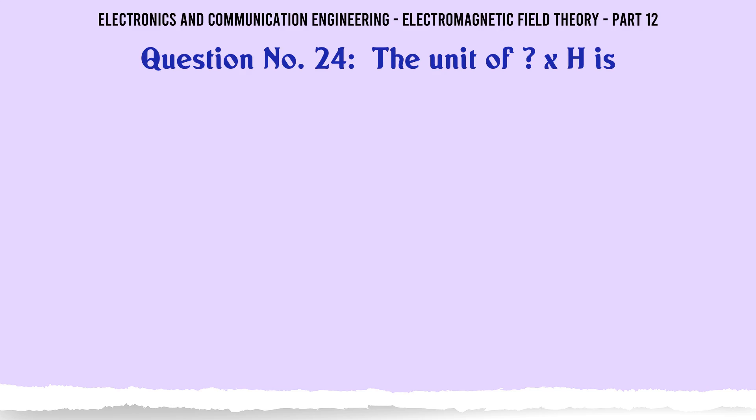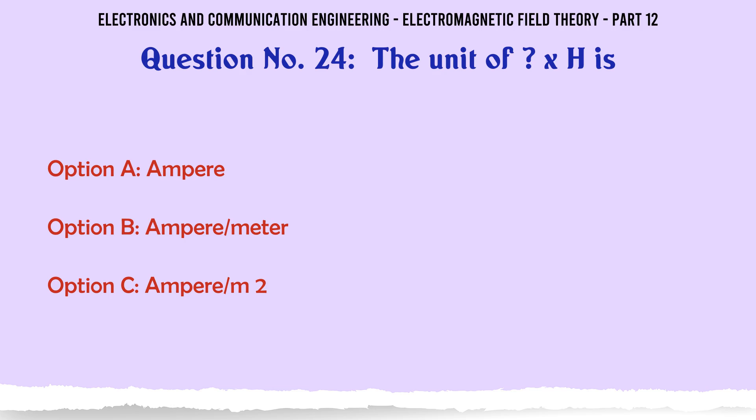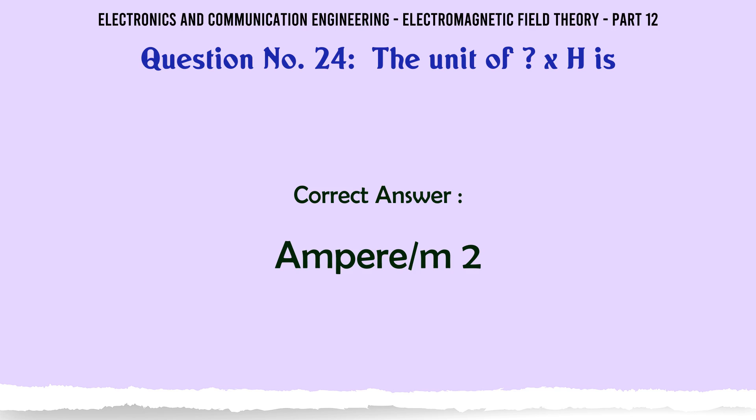The unit of χ_h (magnetic susceptibility) is: A. Ampere, B. Ampere/meter, C. Ampere·m², D. Ampere·meter. The correct answer is Ampere·m².